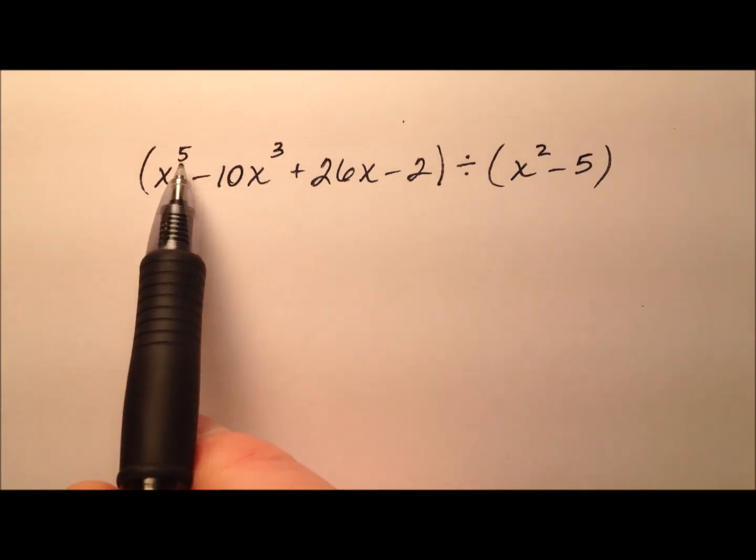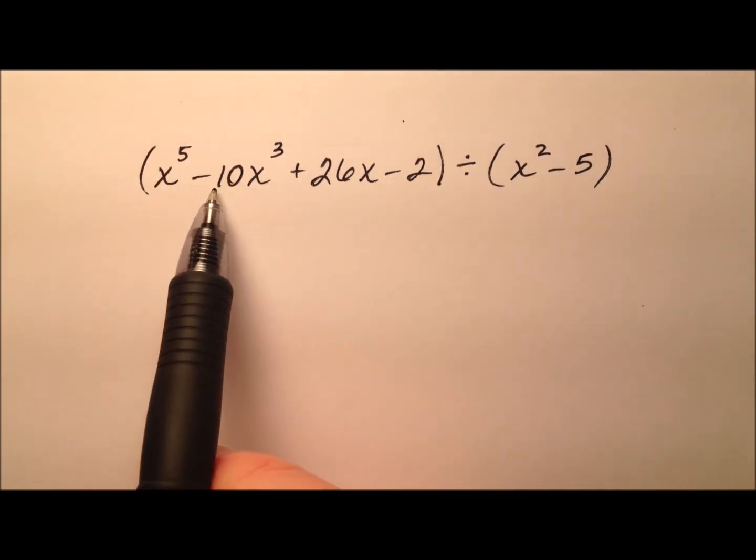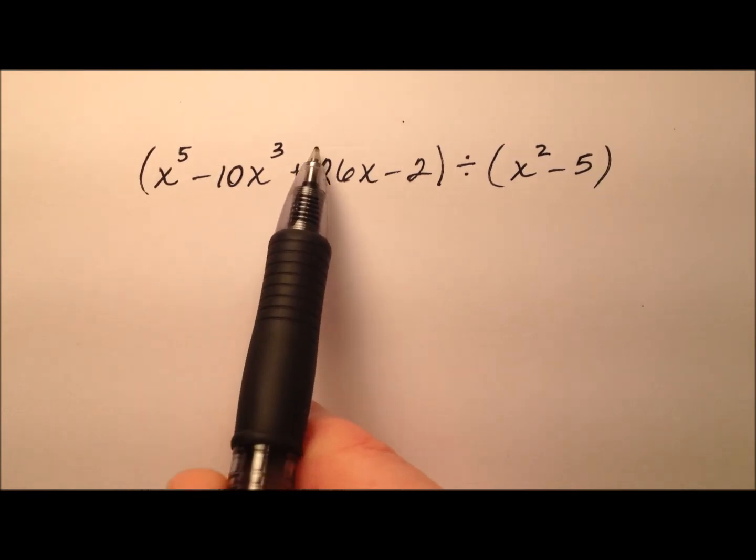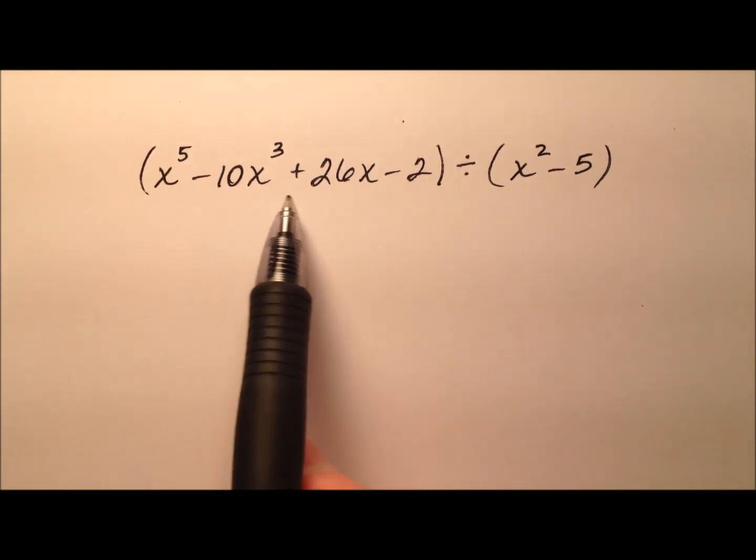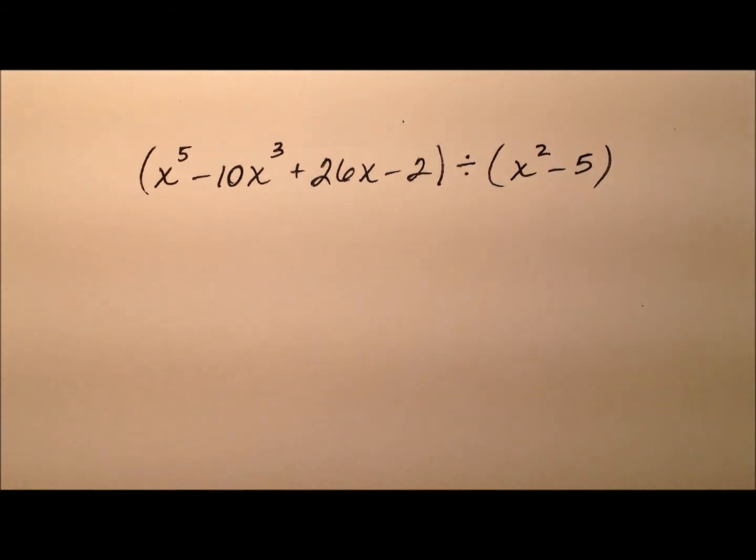So it looks like we have this quintic polynomial with four terms but I don't have an x to the fourth term and I don't have an x squared term. So I'm going to need to accommodate for this when I use my algorithm here.